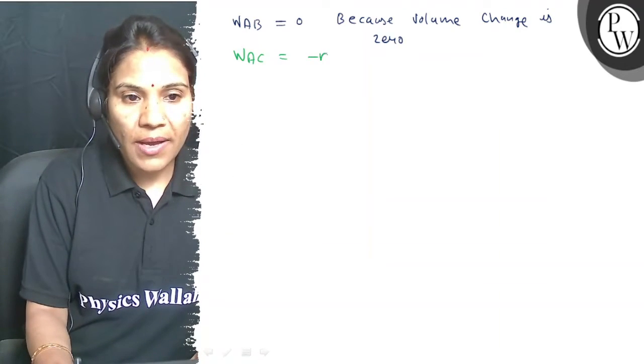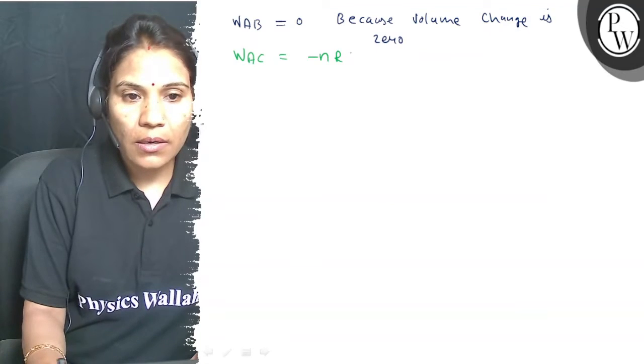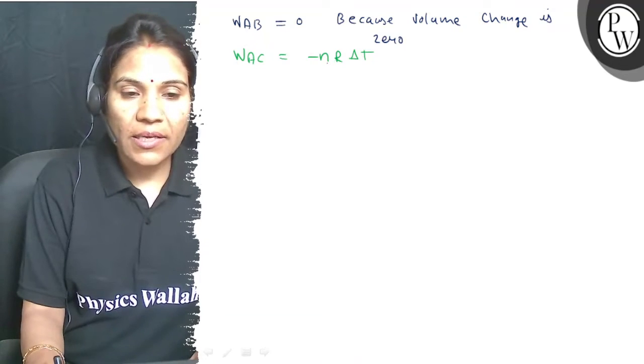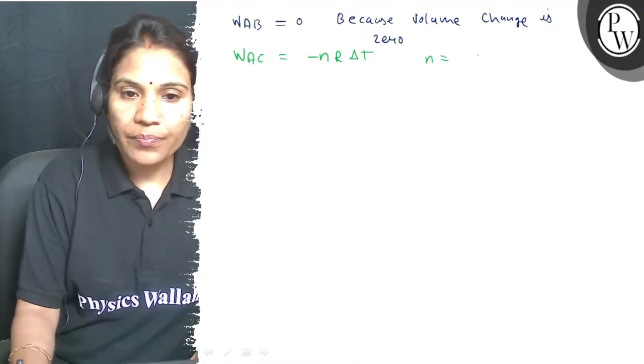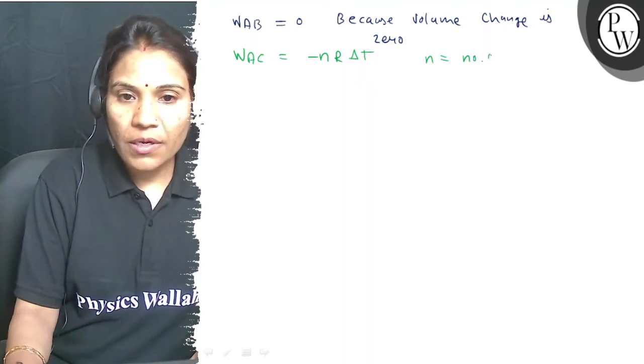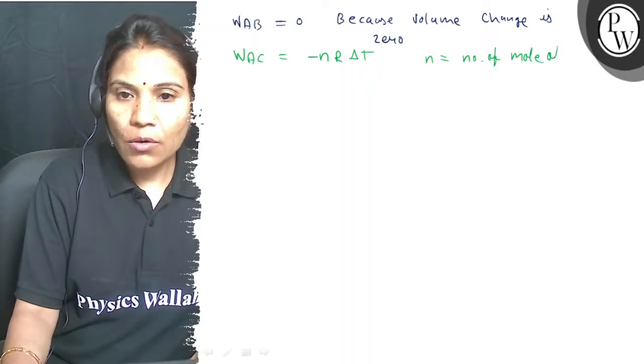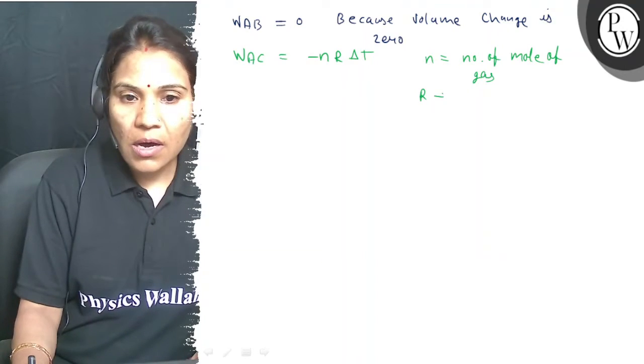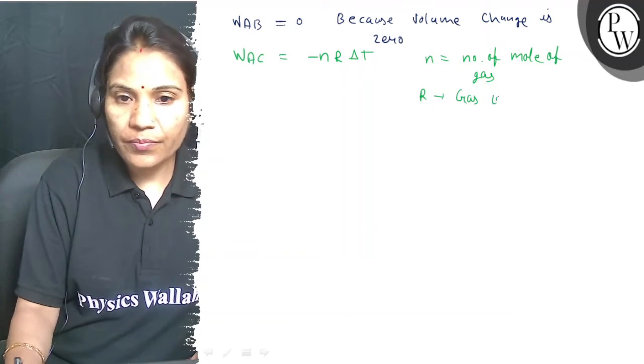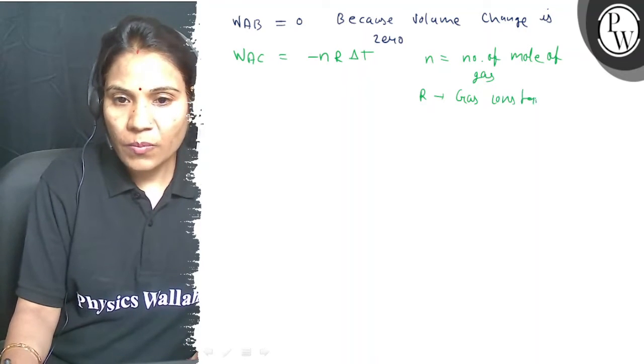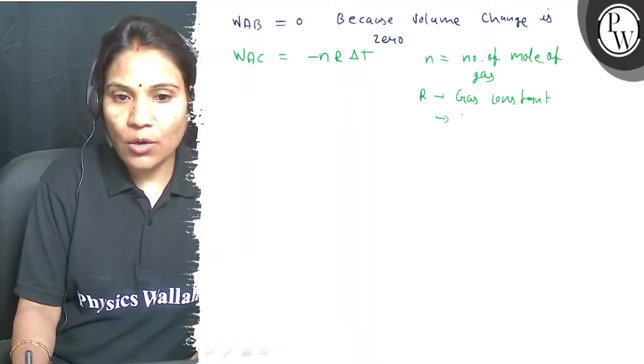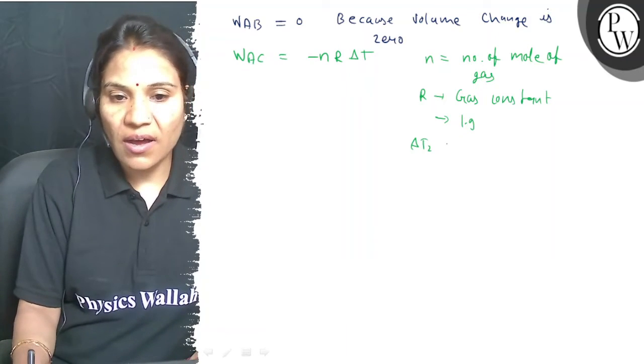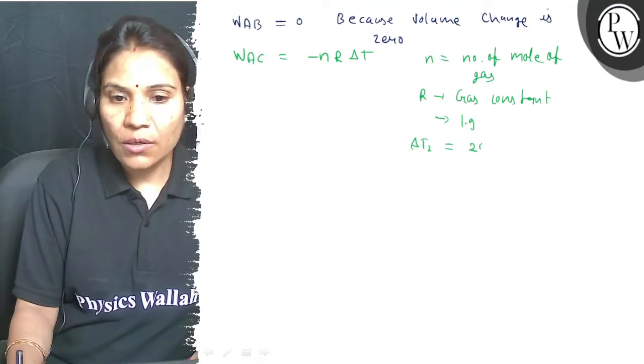W AC equals minus N R delta T. N is the number of moles of gas. R is gas constant and its value in calories is 1.9.